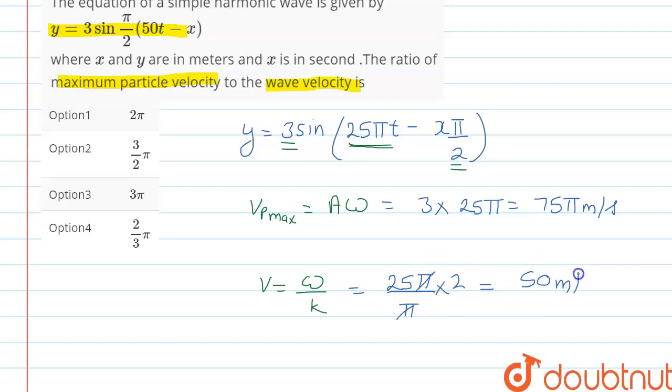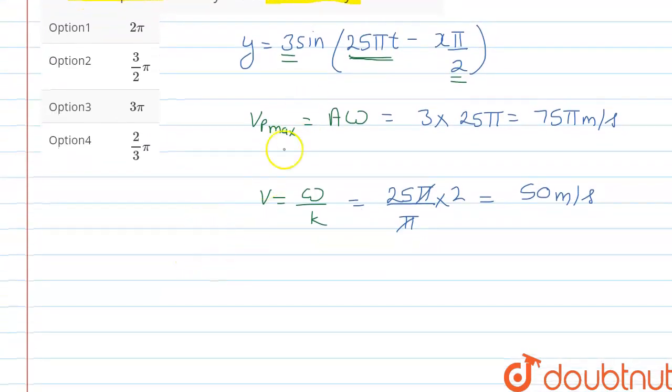So now we have to find the ratio of maximum particle velocity, that is Vp_max, with the wave velocity, that is v. So 75π/50, that will give us 3π/2. Okay, so this is the ratio. Which option is correct? Option 2 is the correct option.